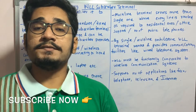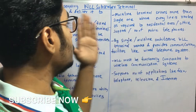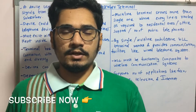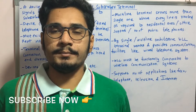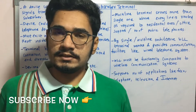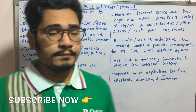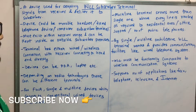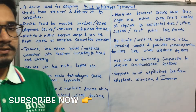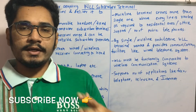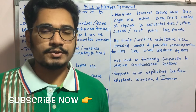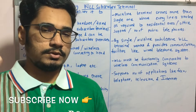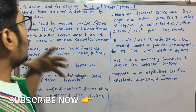Welcome back to the channel. Today we'll be looking at the subscriber terminal of the wireless in local loop — basically what the subscriber terminal looks like and what kind of devices are there. The subscriber terminal is a device used for accepting signals from the receiver and delivering them to subscribers, similar to how you receive notifications when you subscribe to a YouTube channel.